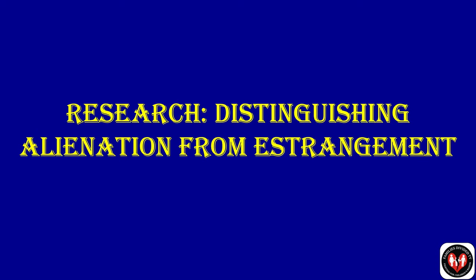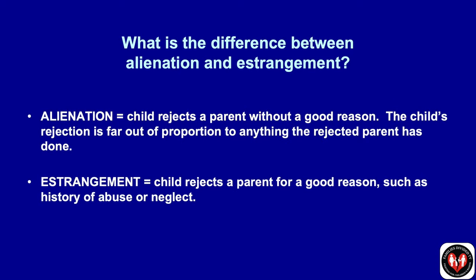The first topic is to distinguish parental alienation from estrangement. Sometimes people get those two terms mixed up, so let's make sure we're all saying the same thing. Alienation refers to situations in which a child rejects a parent without a good reason, and the rejection is far out of proportion to anything that parent has done — usually promoted by the preferred parent. Estrangement, on the other hand, refers to situations where a child rejects a parent and there is a good reason, such as a history of abuse or neglect.